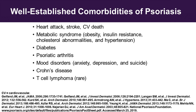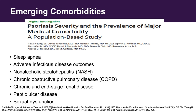There's a whole host of emerging comorbidities that seem to be coming up over time: sleep apnea, adverse infectious disease outcomes, NASH, COPD, chronic and end-stage renal disease, peptic ulcer disease, and sexual dysfunction. I'm starting to think of inflammatory diseases as diseases of accelerated aging, because a lot of what we see is that people develop these morbidities earlier in life than you would expect based on how old they are and the other risk factors they have.